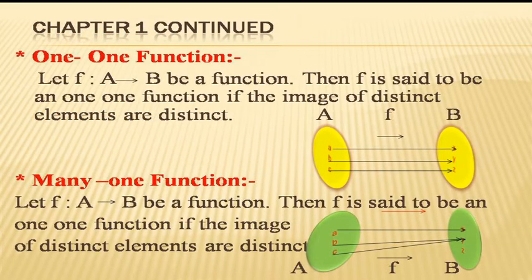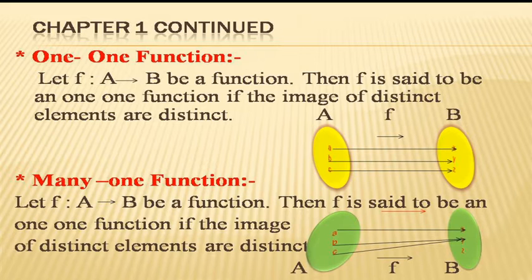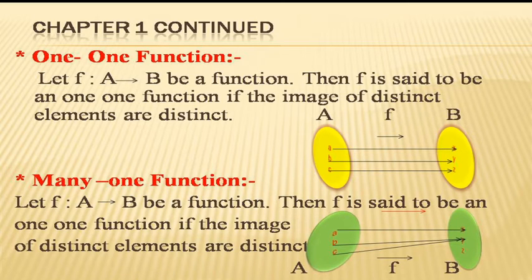The first one is the one-one function. By name it is clear that one goes to one. If f is a function from A to B, where A and B are two non-empty sets, then f is said to be a one-one function if the images of distinct elements are distinct. In the diagram, set A contains elements a, b, c and set B contains elements x, y, z. X is the image of a, y is the image of b, and z is the image of c. Since a and b are different elements and their images x and y are also different, this is an example of a one-one function.